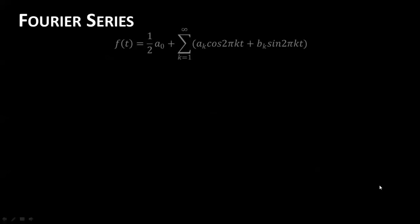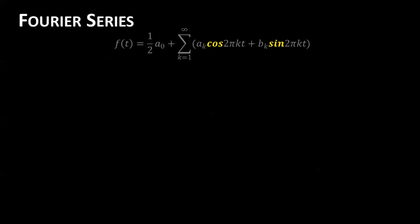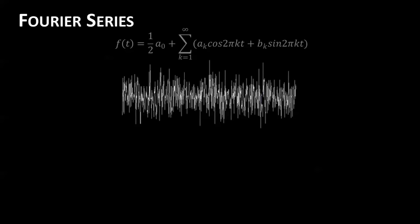If you've ever taken calculus before, you're probably familiar with the Fourier series, which takes any periodic function in time and decomposes it into the sum of a constant and then a series of sines and cosines, or sinusoids. Each of these sinusoids is defined by their frequency, and we're summing over each individual frequency of sine and cosine.